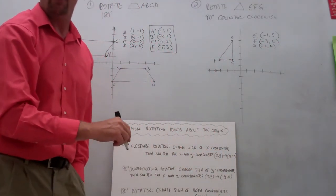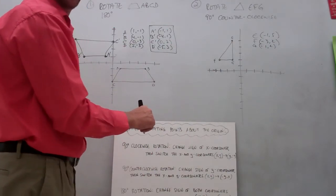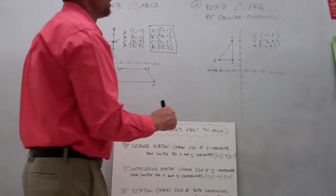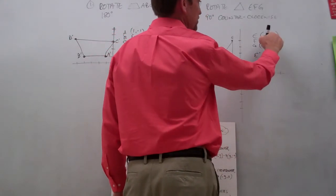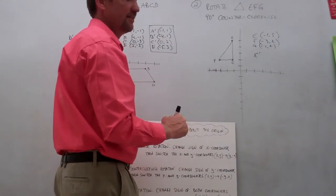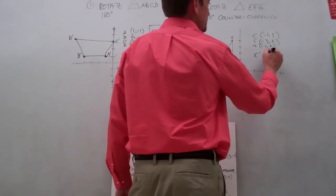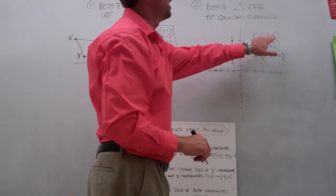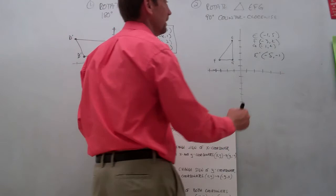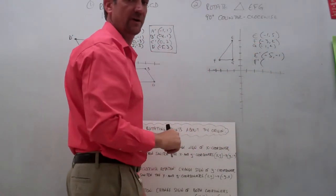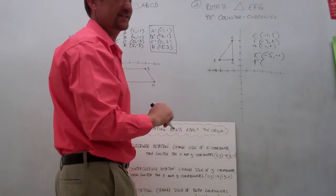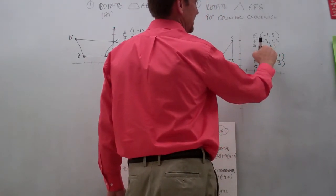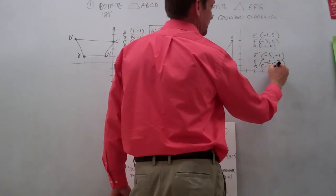Going back to our rules: we change the sign of the y-coordinate and then flip the x and the y. For E prime, we change the sign of y — that 5 becomes negative 5 — then we reverse x and y, so E prime is negative 5, negative 1. F prime: change the sign of y, that 2 becomes negative 2, then flip x and y, giving us negative 2, negative 3. And G prime: negative 1 and 2 — change sign of y to get negative 2 — then flip to make it negative 2, negative 1.